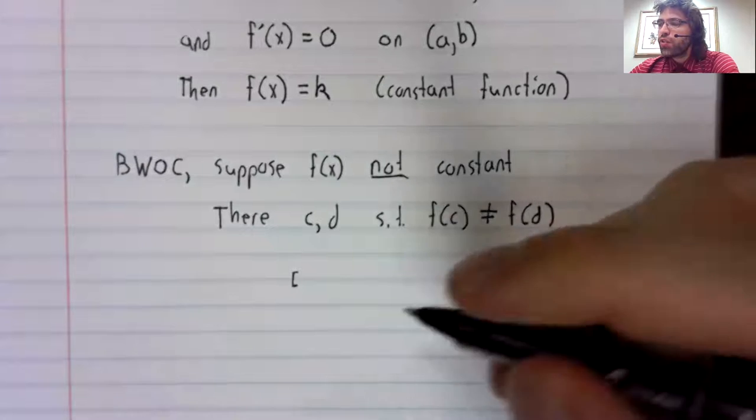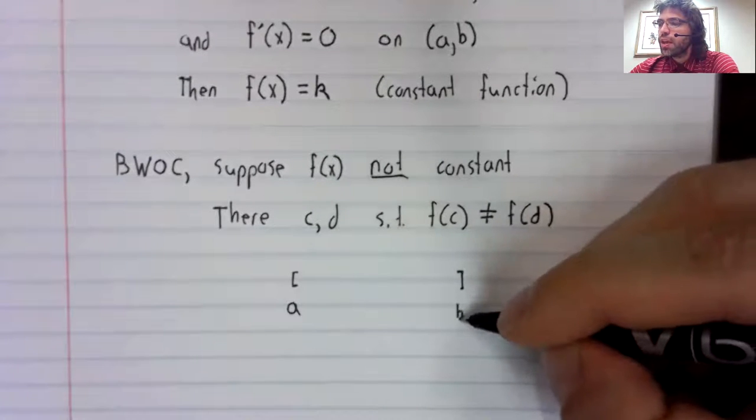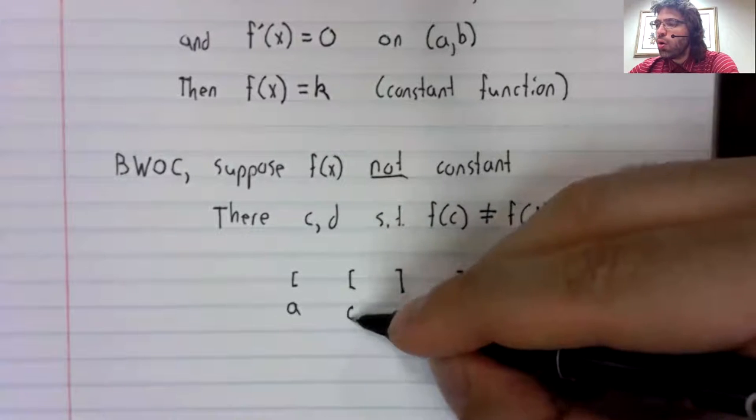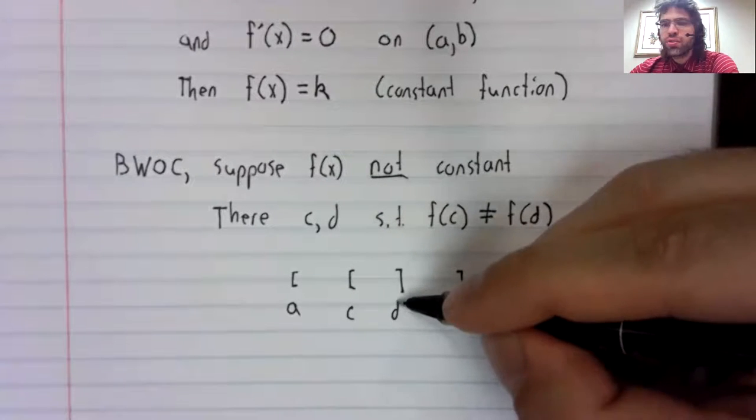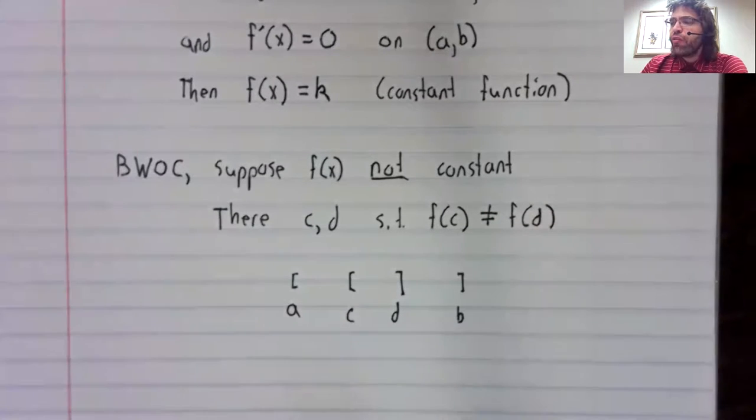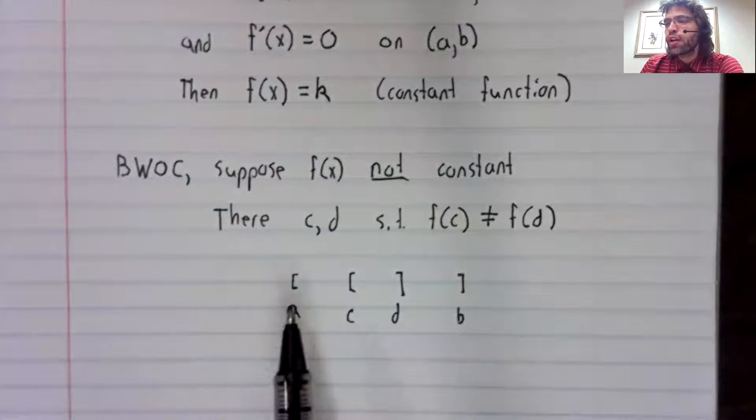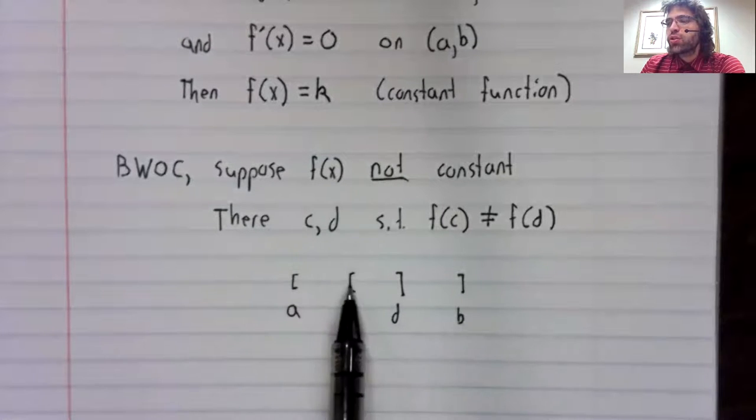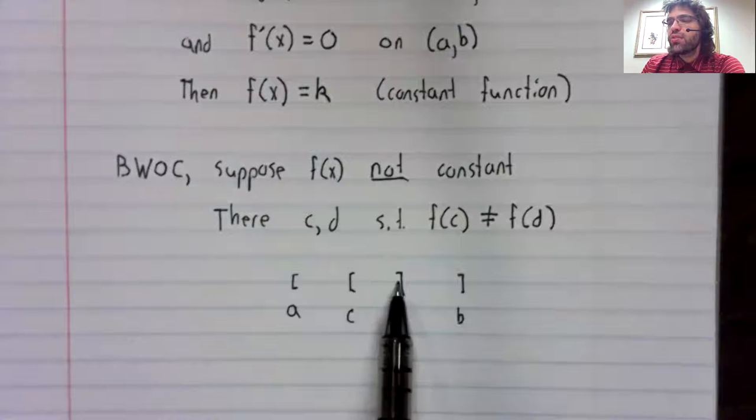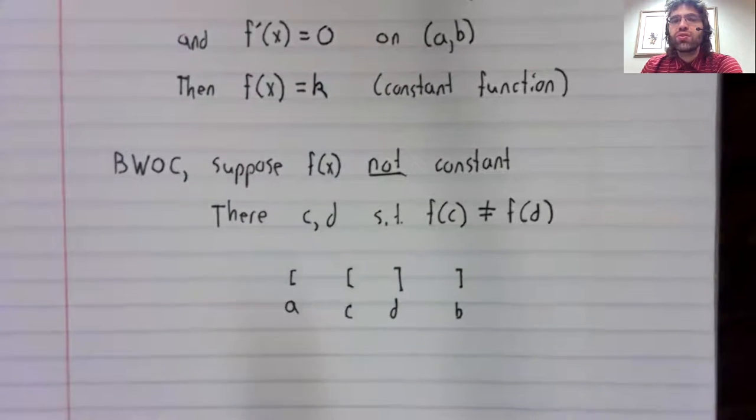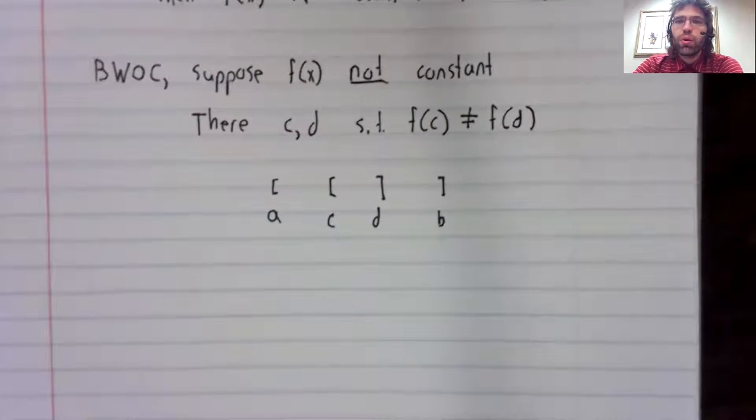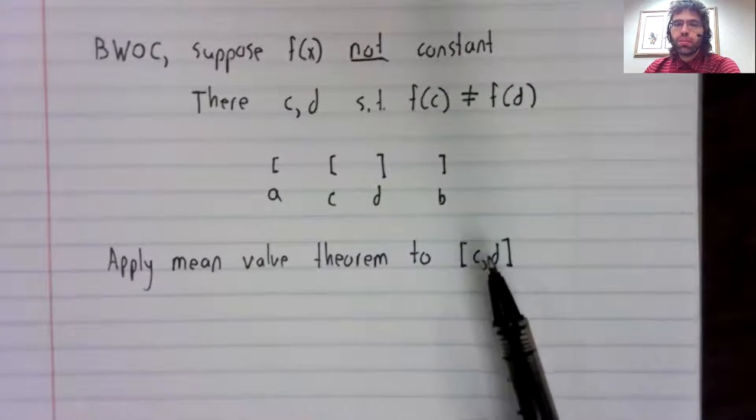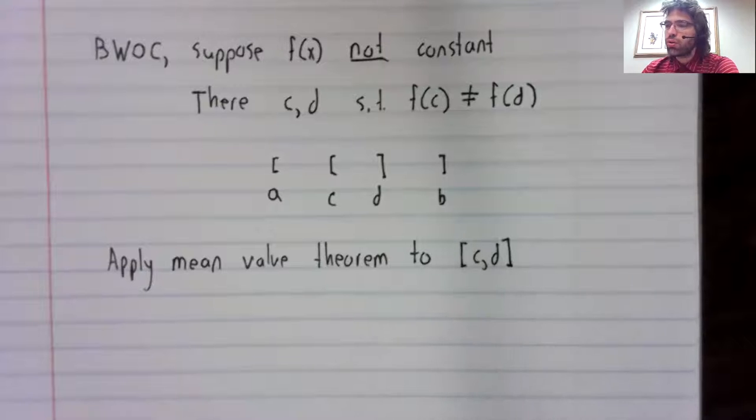So you've got this interval [a,b] and you've got this smaller interval inside of it. If f was continuous and differentiable on this bigger interval, it's certainly continuous and differentiable on this smaller interval. And we can apply the mean value theorem to this smaller interval.